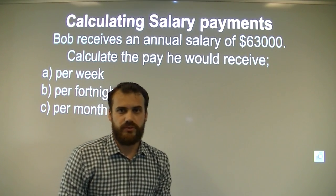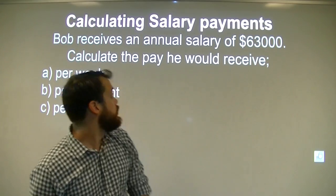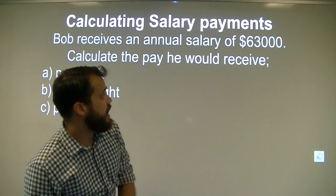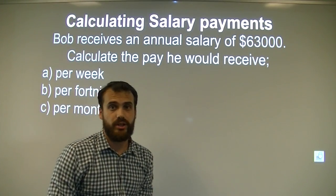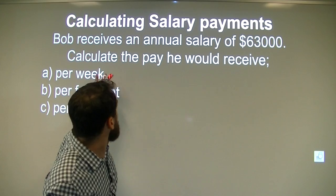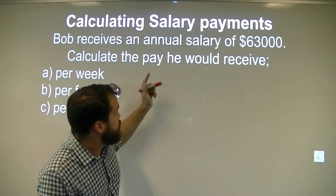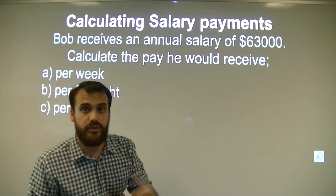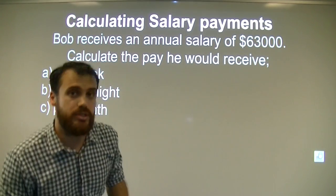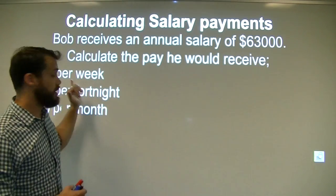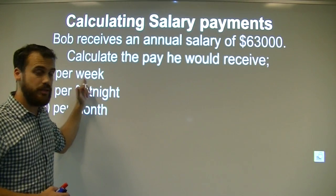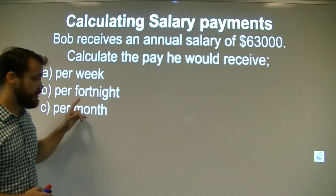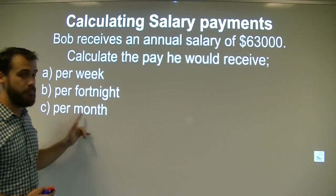Let's look at this question first of all. Bob receives an annual salary of $63,000. We're going to calculate the pay he would receive — we'll do three different questions: calculate the pay he would receive per week, per fortnight, and per month.